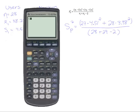So we'll use an open parenthesis, then 27 times 4.51 squared, plus 28 times 3.98 squared.